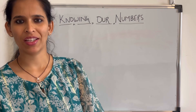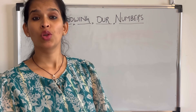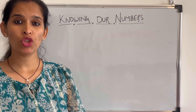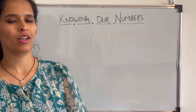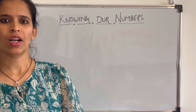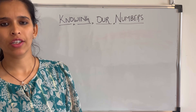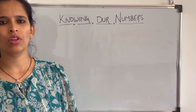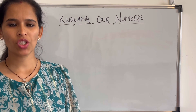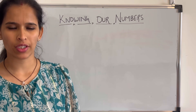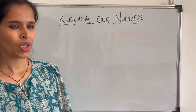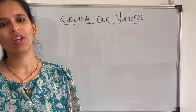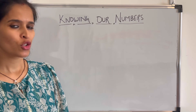Hello everyone, welcome to Just Math. Today we are going to learn about our number system. Number systems are the first thing we are introduced to in our early childhood — when we start formal education, the first thing we learn is either ABC or 1, 2, 3. Today we are going to learn about numbers typically covered around Grade 5 or 6, such as prime numbers, even numbers, and odd numbers.